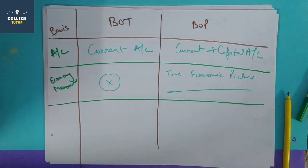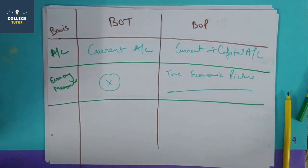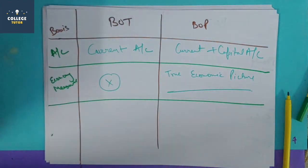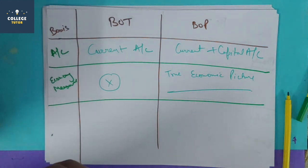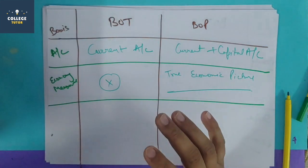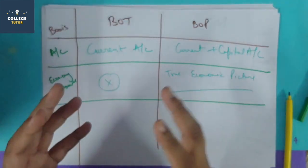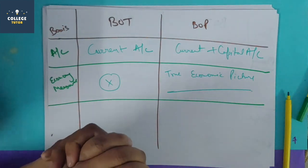If my balance of payment is good for some country and balance of trade is not good, then the economic situation is still good. But if the balance of payment is not good for any country and the balance of trade is also not good, then there is no good economic stability.